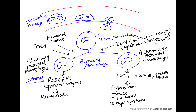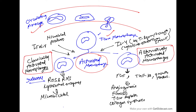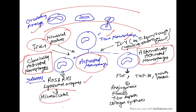Now let us see the role in chronic inflammation. Circulating monocytes enter the tissue and convert into tissue macrophages, which then get activated. There are two mechanisms of activation: classically activated macrophages, activated by microbial products or interferon gamma; and alternatively activated macrophages, activated by cytokines other than interferon gamma, such as interleukin-4. Classically activated macrophages release reactive oxygen species, nitrogen species, and lysosomal enzymes — so their role is microbicidal.